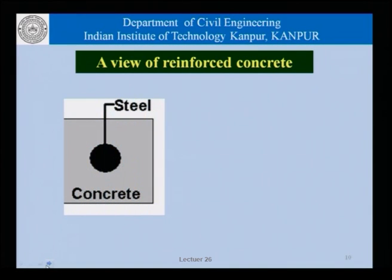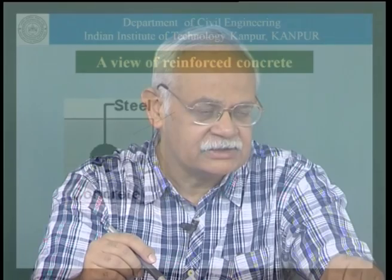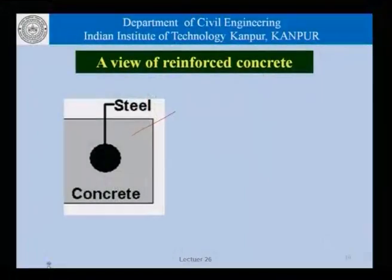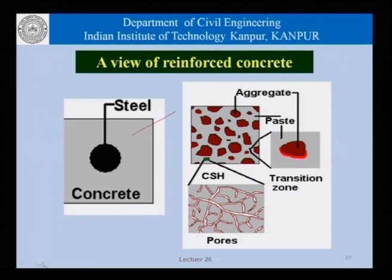Coming to the introduction and background, let us go back to a picture seen earlier in the course. This is a view of reinforced concrete — we have a steel bar embedded in concrete. This is how we have most of our reinforced concrete structures, whether it is a beam, slab, column, or wall. We can always imagine a model where the reinforcing bar is embedded in concrete, and that is something we must keep at the back of our mind. As far as concrete is concerned, it is nothing but aggregates suspended in mortar.